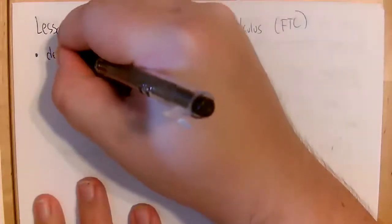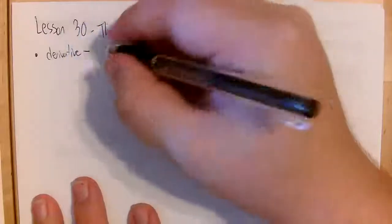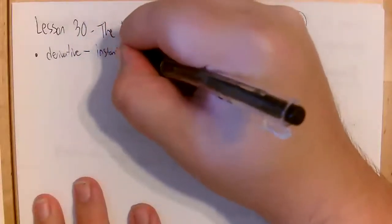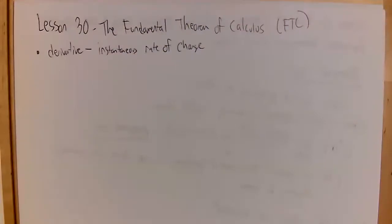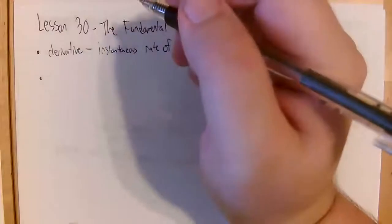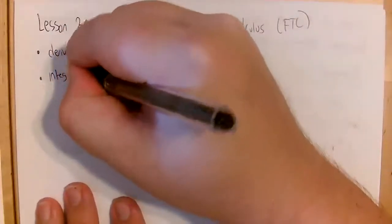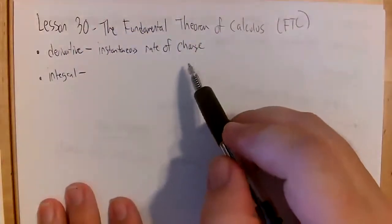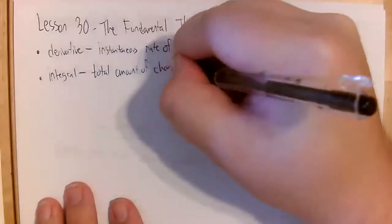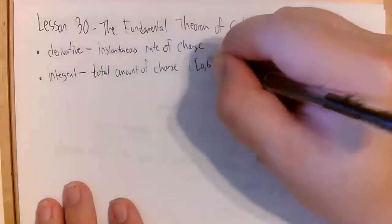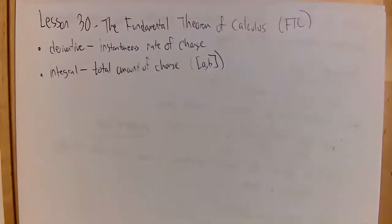Remember that a derivative is the instantaneous rate of change of a function. So if you find a derivative of a function at x equals one, that's telling you how quickly the function is increasing or decreasing at x equals one. Now we've been talking about the definite integral. The integral has to do with change as well — it represents the total amount of change on the interval a to b. By taking the integral between two points, you're finding out how much the function changed over that interval.